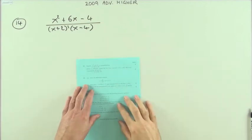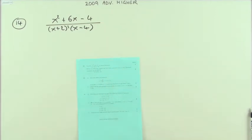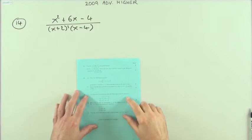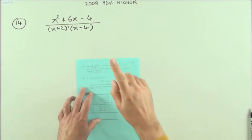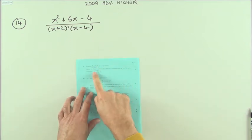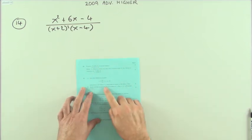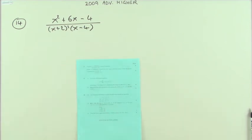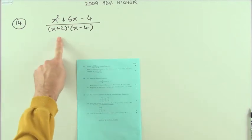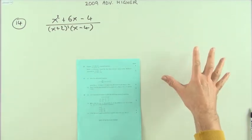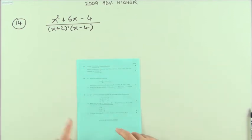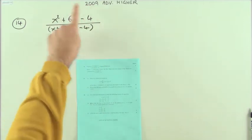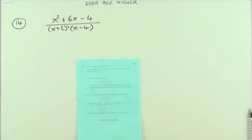Number 14 from the 2009 Advanced Higher. At last, the partial fractions question. Normally you'd expect that a lot earlier, and you'd also expect it with the reintegration to follow. Slight twist this time: express that in partial fractions and hence, or otherwise, find the first three non-zero terms in the Maclaurin expansion of this. Obviously, you're going to be putting that into partial fractions because it'll be easier to go through the derivatives of those.